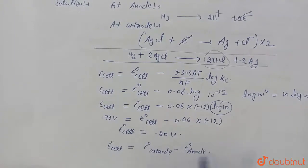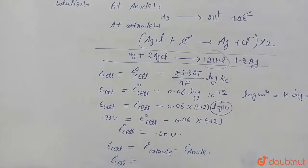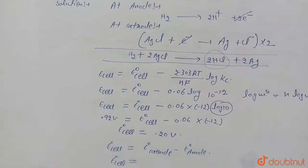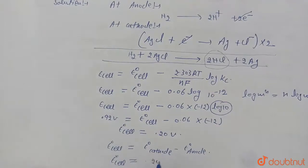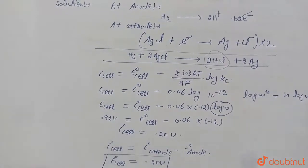Then its E naught cell value will be zero. So their value of cell will be 0.20 volt. Is it clear? Thank you.